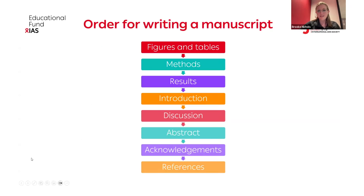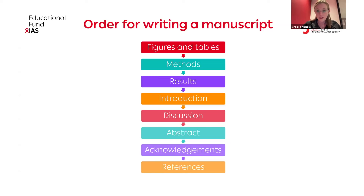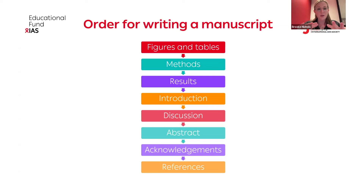Just because an article follows a certain order doesn't mean that's the easiest way to write it. We typically recommend you start with the figures and the tables — this is the meat of your research, because it will help you figure out the story you want to tell. Once you have that, you can start on an outline. Getting the first words down can be difficult, so start by setting up your article: title page, title, authors — don't forget middle initials — following what's typically required by the journal.